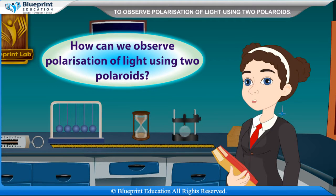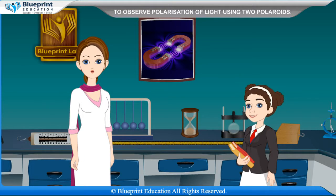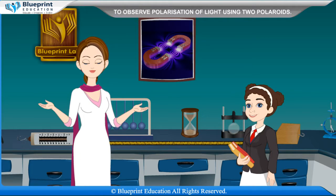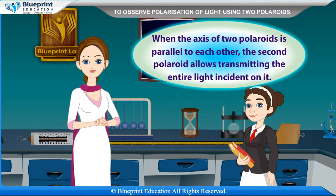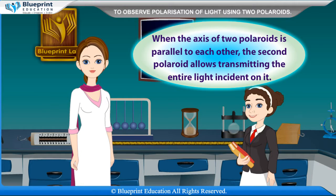Madam, how can we observe polarization of light using two Polaroids? When polarized light is incident on a Polaroid, the light transmitted through the Polaroid is plane polarized, having electric vectors parallel to the axis of the Polaroid. When the axis of two Polaroids is parallel to each other, the second Polaroid allows transmitting the entire light incident on it.